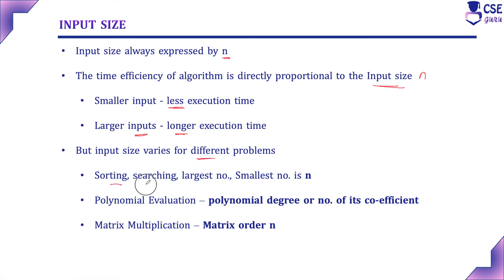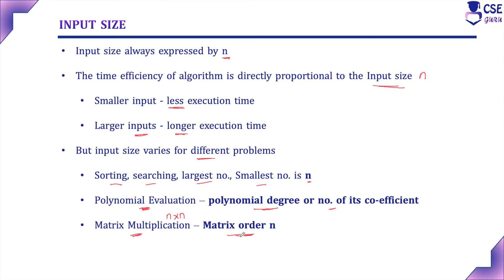However, the input size n is not the same factor for all kinds of problems; it varies. For example, for sorting, searching, finding the largest or smallest number, the input size n is the array size. For polynomial evaluation, n is the polynomial degree or number of its coefficients. For matrix multiplication of an n×n matrix, the input size is the matrix order n.